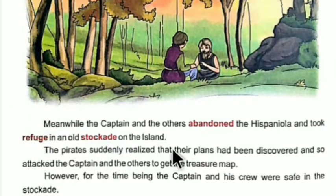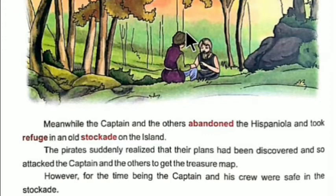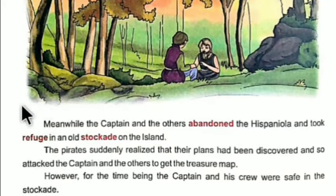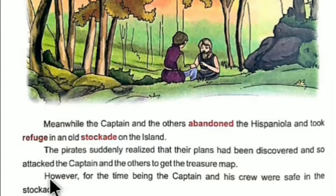The pirates suddenly realized that their plan had been discovered and attacked the captain and the others to get the treasure map. Long John Silver got the hint that their plan had been discovered and decided to kill them and take the map from Jim Hawkins. However, for the time being, the captain and his crew were safe in the stockade, helped by Ben Gunn.